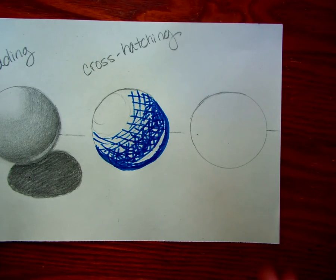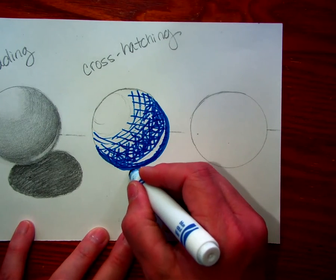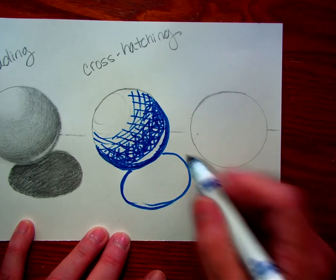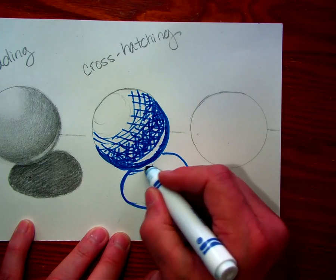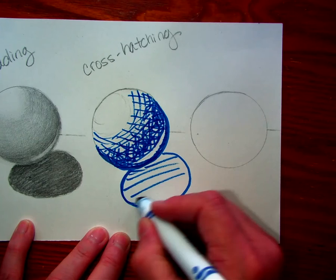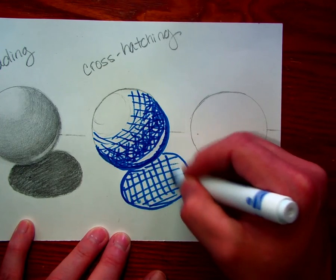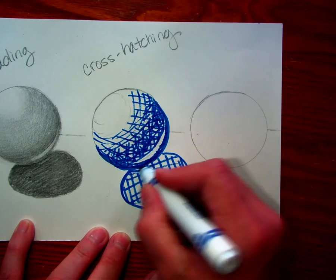So the darker the value, and then for your shadow, you would draw your circle. And again, you would do your lines going across to get your darkest, your absolute darkest value, which you want right up next to this.